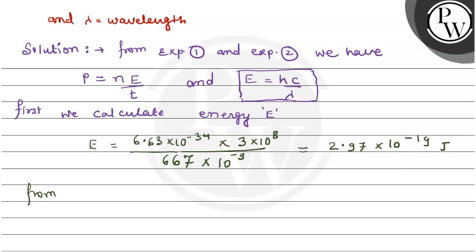Now calculate n value. From P is equals to n E by t, we have n is equals to P into t divided by E. Let's substitute the values and calculate this expression.